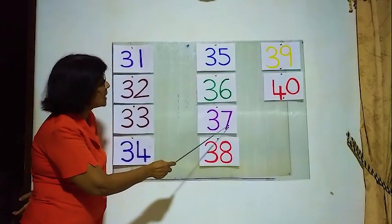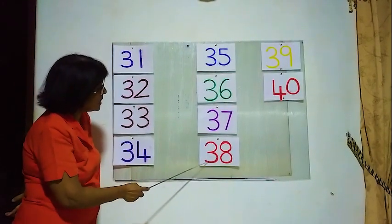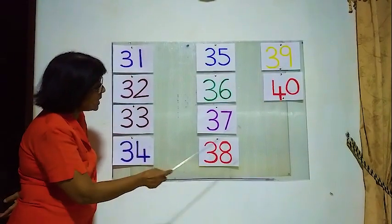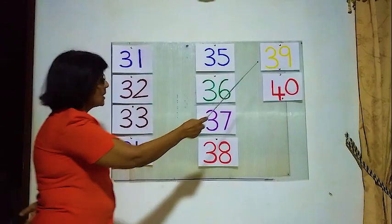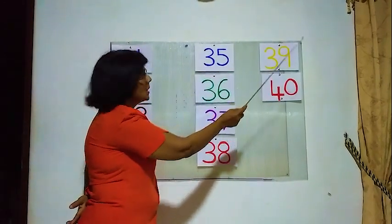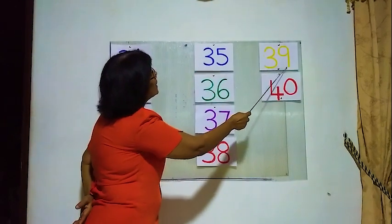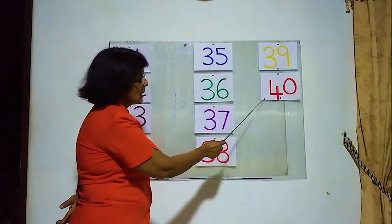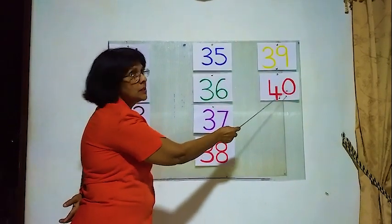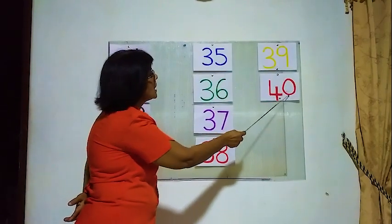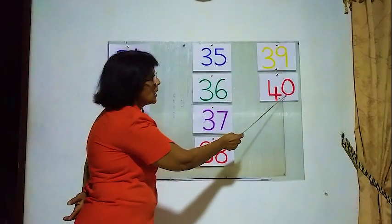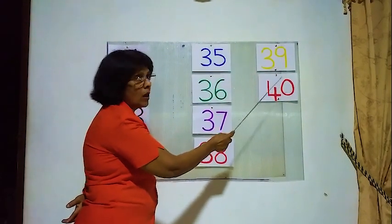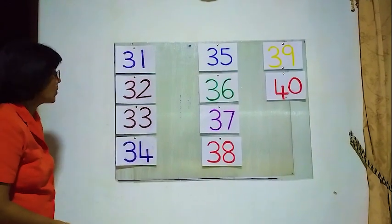Here 3 and 8, 38. Here 3 and 9, 39. Here 4 and 0, 40. 4 and 0 equals 40. Now we will count from the beginning.